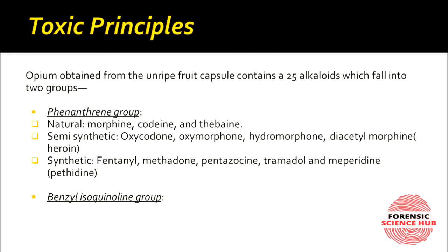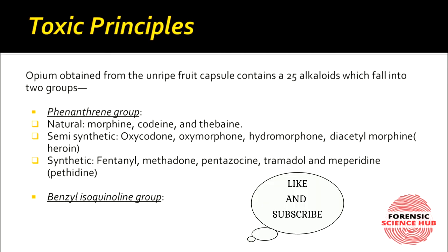In the phenanthrene group there are three further divisions: natural, semi-synthetic, and synthetic. Under natural come morphine, codeine, and thebaine. Under semi-synthetic come oxycodone, oxymorphone, hydromorphone, and diacetylmorphine — also known as heroin or brown sugar.